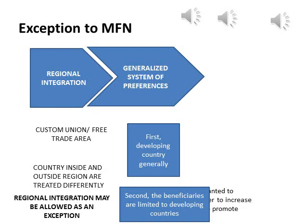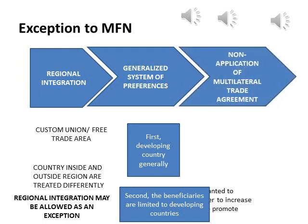The GSP has the following characteristics: first, preferential tariffs may be applied not only to countries with special historical and political relationships, but also to developing countries more generally — thus the system is described as 'generalized.' Second, the beneficiaries are limited to developing countries. Finally, it is a benefit unilaterally granted by developed countries to developing countries. The third exception is non-application of multilateral trade agreements between particular member states, under WTO Article 13.